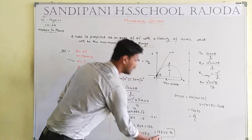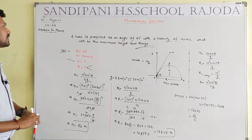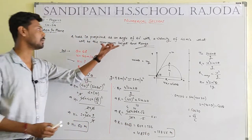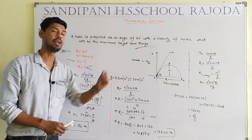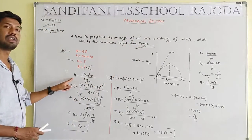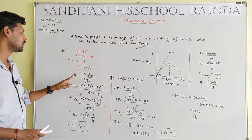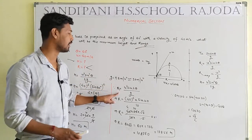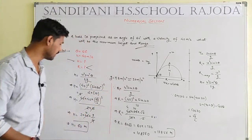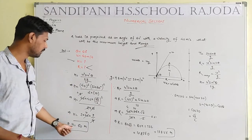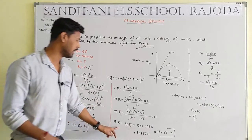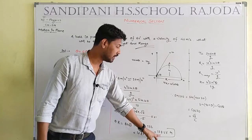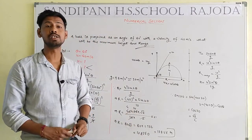So the final result for this question: we had to find two things — maximum height and range. Maximum height H = 60 meters and range R = 138.56 meters.